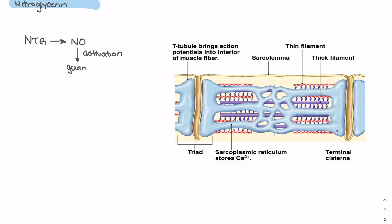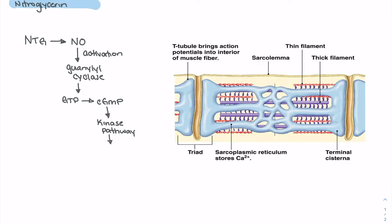Nitrous oxide levels activate guanylyl cyclase, and as we have activation of guanylyl cyclase, that is going to convert GTP into cGMP. It's the cGMP which activates the kinase pathways that lead to the actual functions causing vascular relaxation. Those kinase pathways lead to an increase in reuptake of calcium in the sarcoplasmic reticulum of vascular smooth muscle.